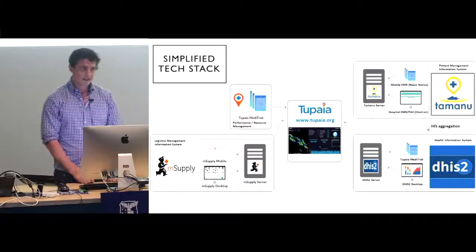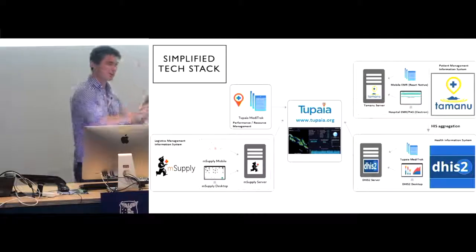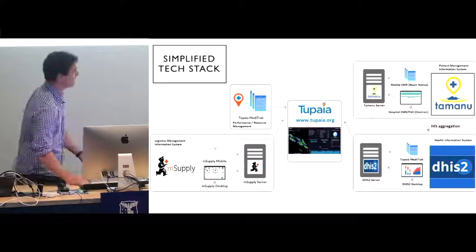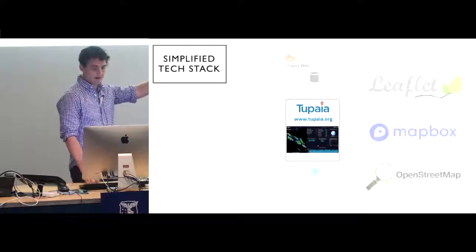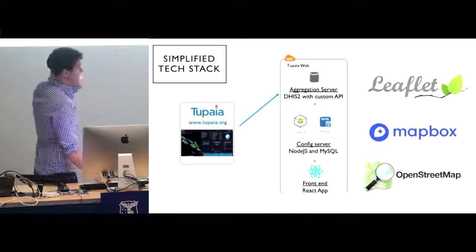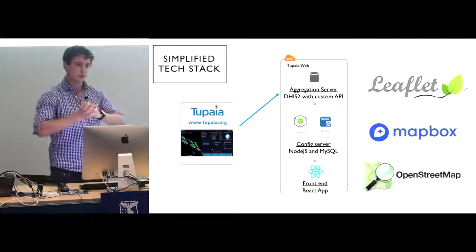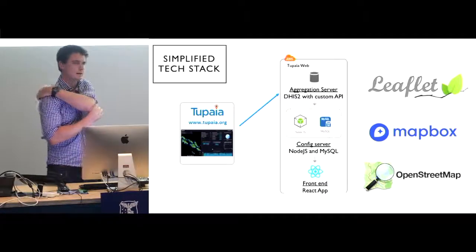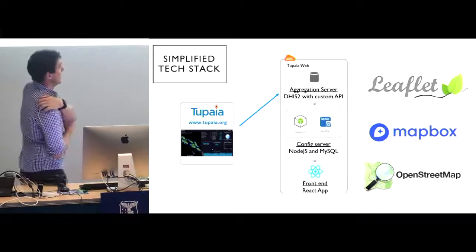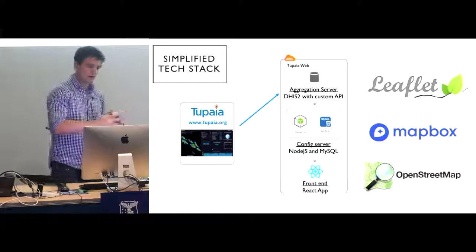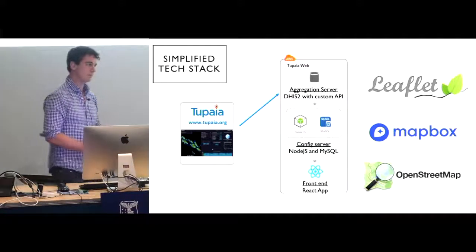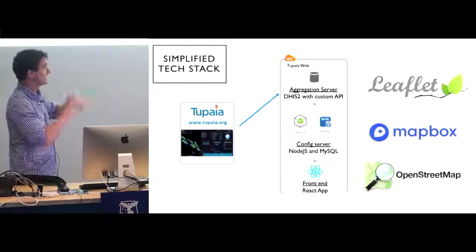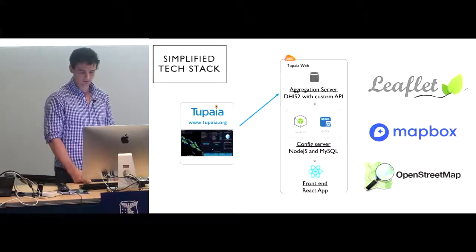This is our basic architecture - I'll talk to the bird's-eye view. We have multiple and various sources feeding data into Tupaya. We use an aggregation server to pull all that data together, which is a DHIS2 instance. DHIS2 is a large open source HIS project run by the University of Oslo in Norway. We then run it through a config server to do analysis that DHIS2 can't handle, and then the front end is a React front end. We use Mapbox, OpenStreetMap, and Leaflet for our mapping.